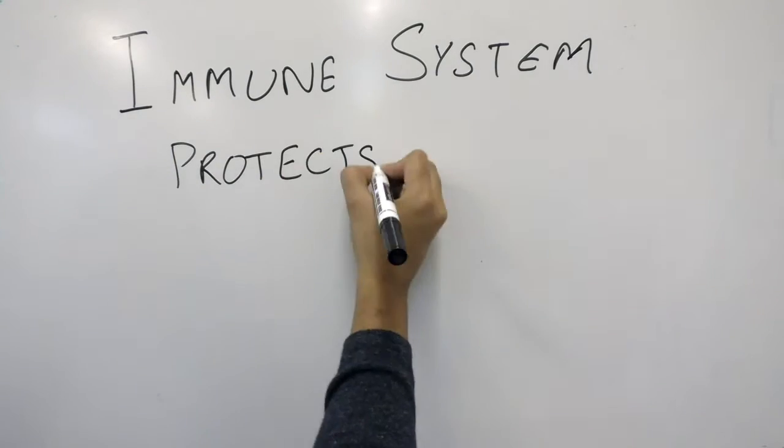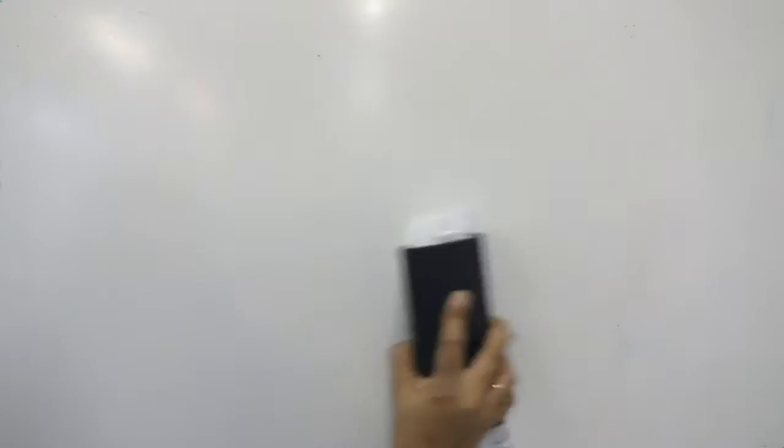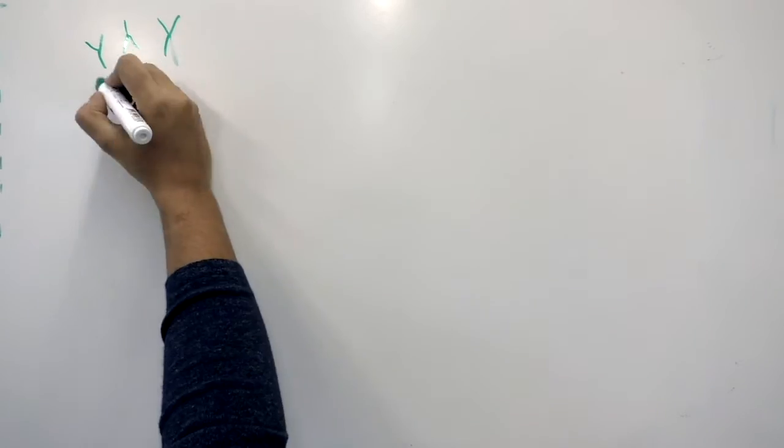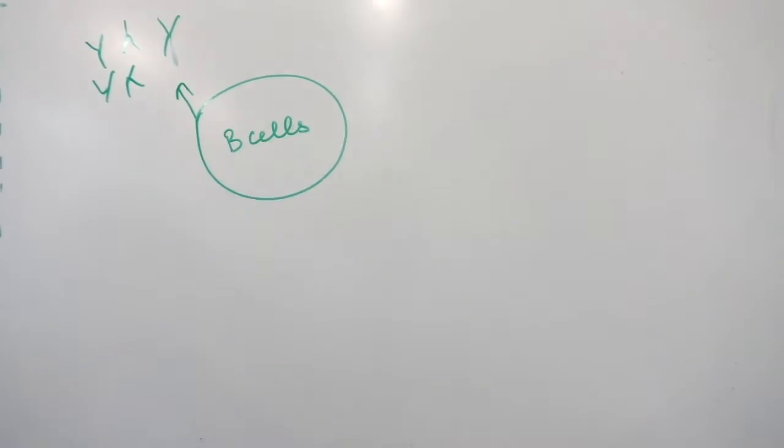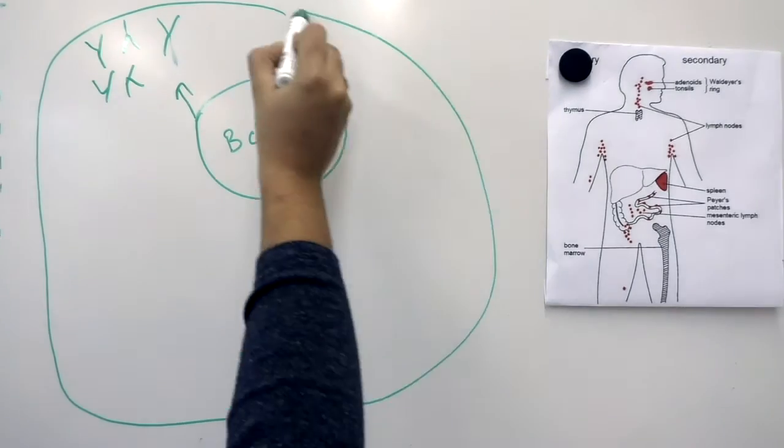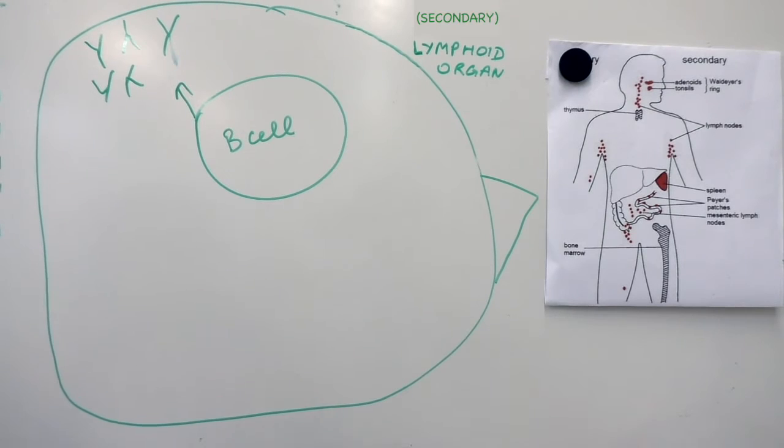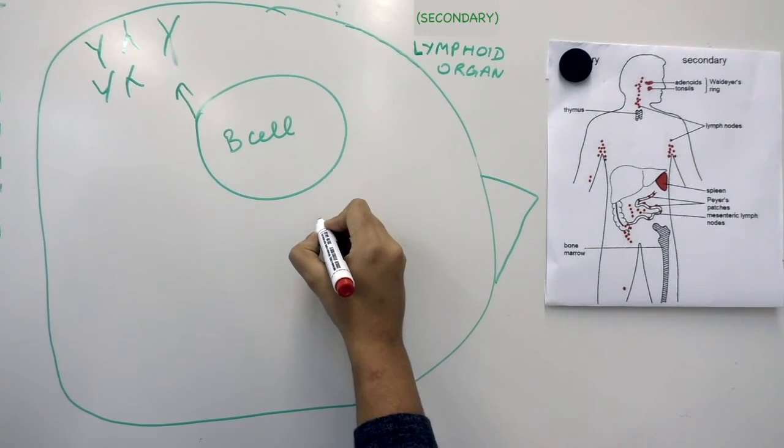The immune system protects us against bugs by producing antibodies against them. These antibodies are produced in specialized organs called lymphoid organs by specific immune cells called B cells. To produce effective antibodies, the B cells get help from other immune cells.